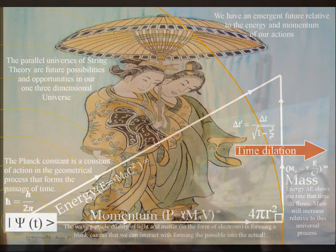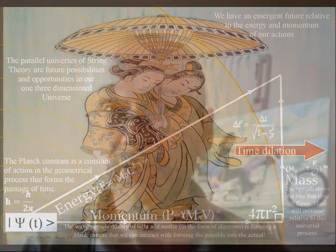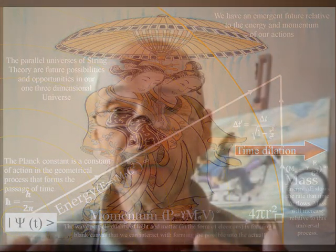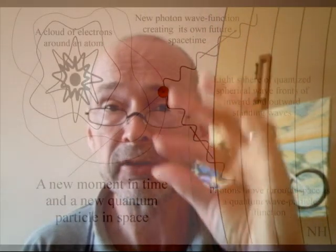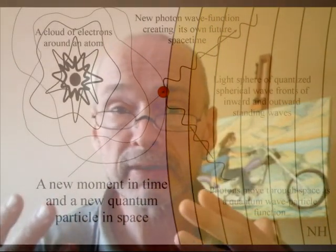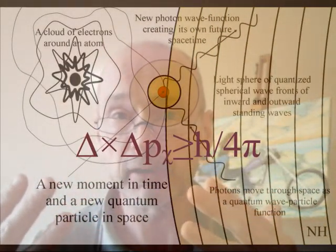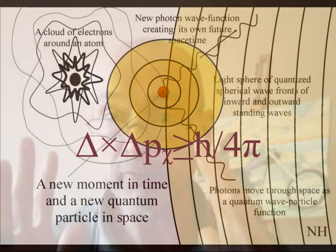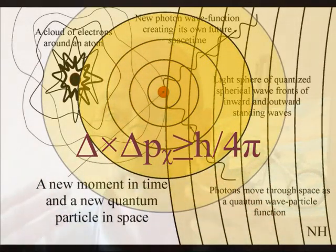Each one of us is at the forefront of the creative process, with our own creative timeline from the past to an uncertain future, that at the smallest scale of this process is represented by the probability function, or quantum wave particle function, of quantum mechanics.